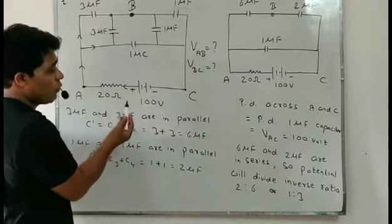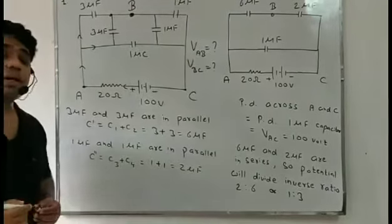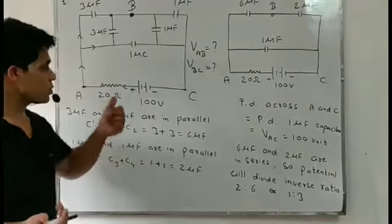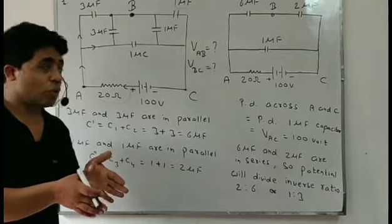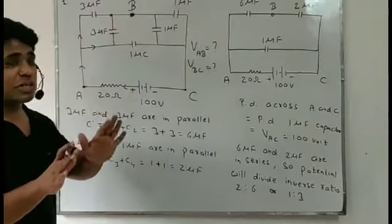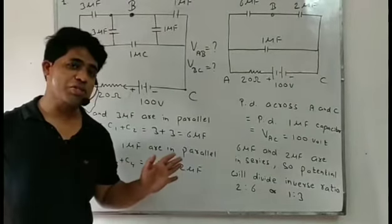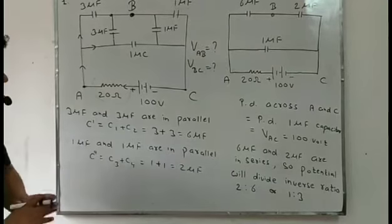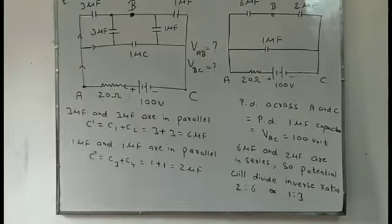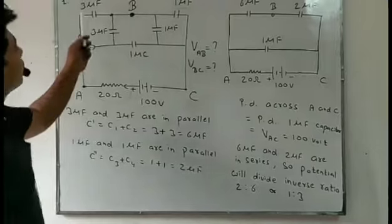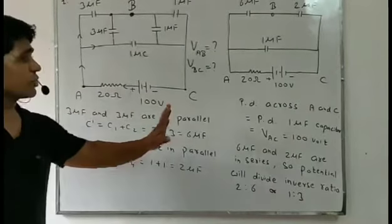Current will not flow in this circuit, so all the capacitors remain charged. Charge will not flow in that condition, so this resistance will be neglected — there will be no use because there is no flow of charge since the circuit is in steady state. Steady state means all the capacitors are fully charged. Now, 3 and 3 are in parallel, so it becomes 6 microfarad.